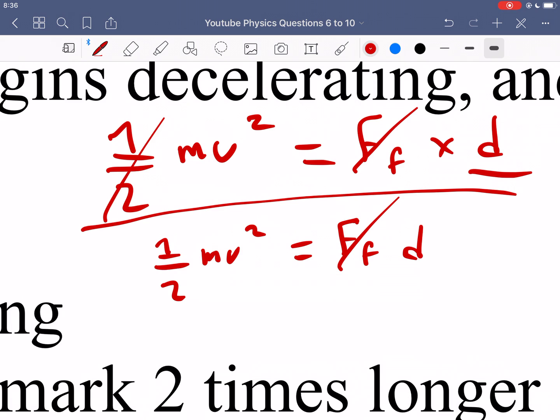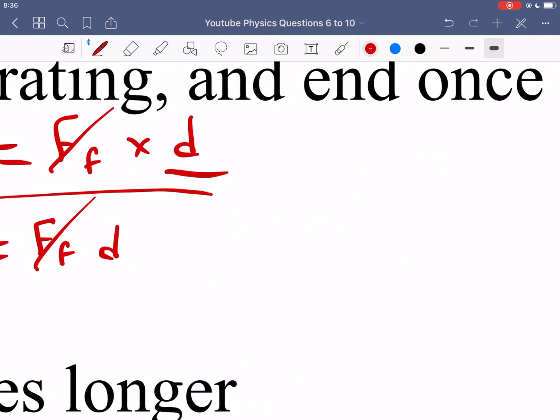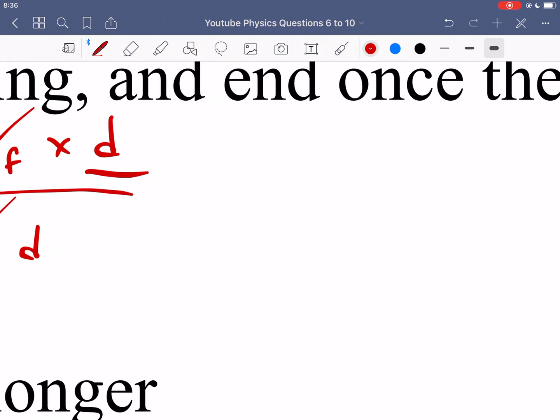And then we can see that these things cancel out, the half cancels out, the mass also cancels out. So all we have left is velocity squared over velocity squared equals distance over distance. So the ratio of the velocities is going to be the same as the ratio of the distances.